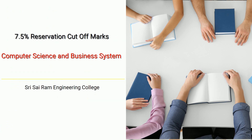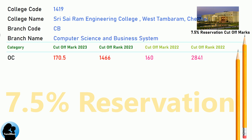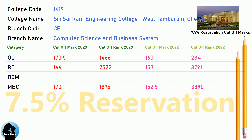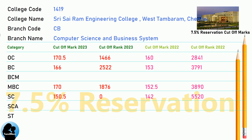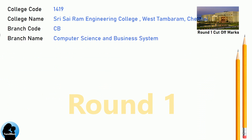DNA 7.5 Reservation Cut-off for Shri Sairam Engineering College in Computer Science and Business System. DNA 8.5 Reservation Cut-off for Shri Sairam Engineering College in Computer Science and Business System.